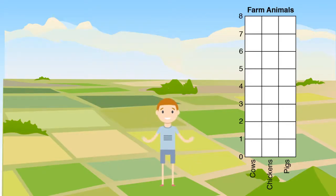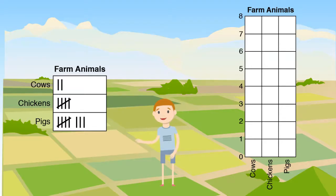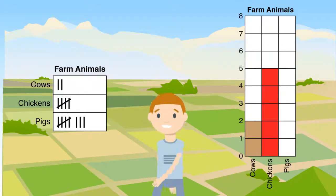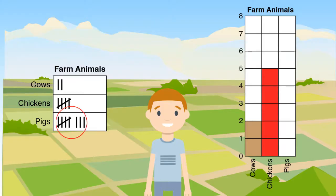Here is our tally chart from earlier. We can see that my friend has two cows on her farm. We can shade two spaces above the cows category. Since my friend also has five chickens, we can shade five spaces above the chickens category. How many spaces do we need to shade above pigs? Great job!